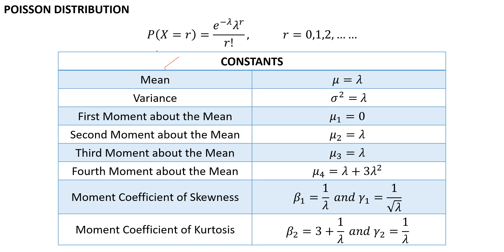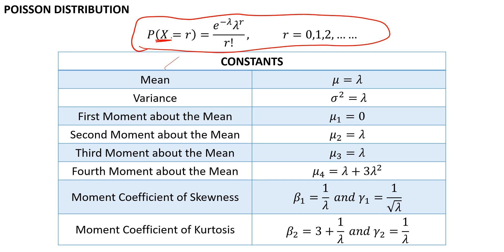First of all, in our last video we have already seen that this is how we find the probability for a variable x that follows Poisson distribution. That is, probability of x equal to r is equal to e to the power of minus lambda, times lambda to the power r, upon r factorial, where r can vary between 0, 1, 2 and so on. In this formula, lambda is the only parameter that we require in order to find the probability of x equal to r. So the only parameter here is lambda.